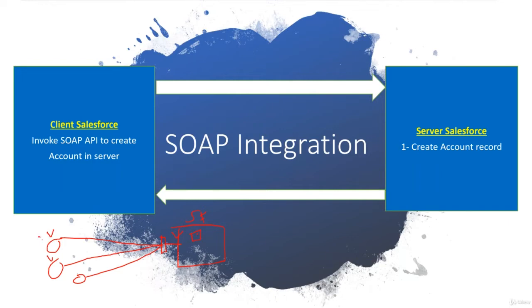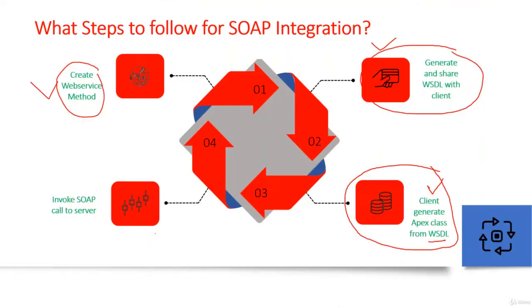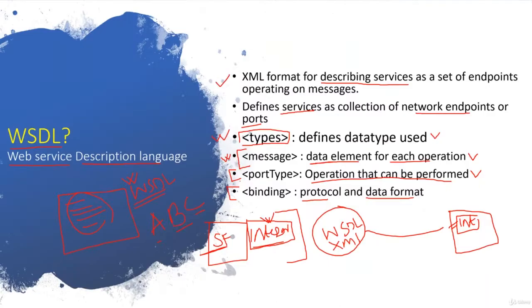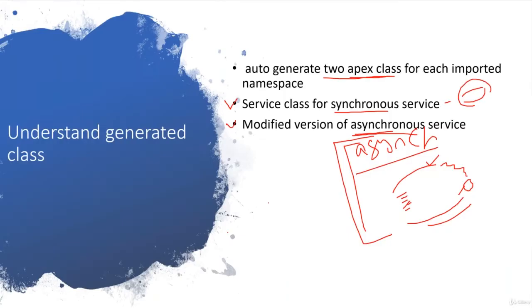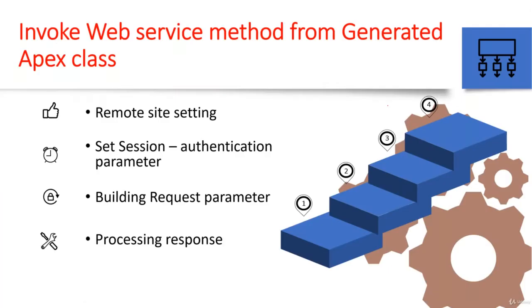Now let's see how they are going to invoke my SOAP call. The WSDL we generated has been shared, and from the WSDL we are able to create the Apex classes in my client. Salesforce auto-generated two Apex classes — one for synchronous services and one for asynchronous services — and now we'll see how I'm going to invoke those methods.